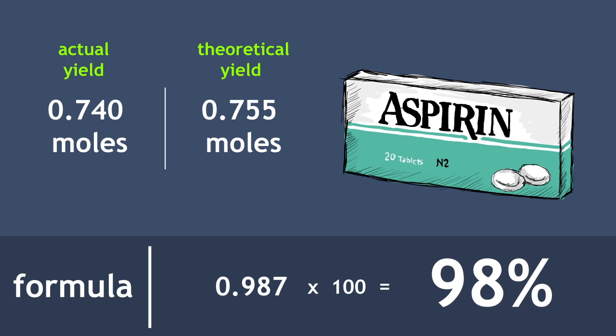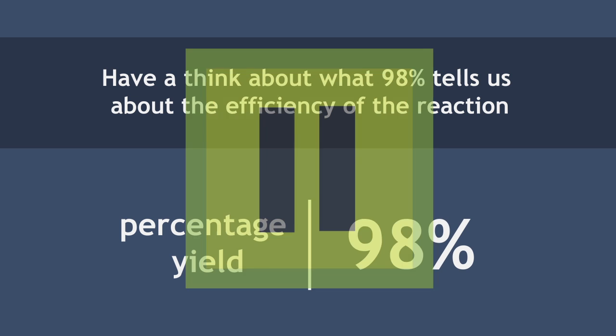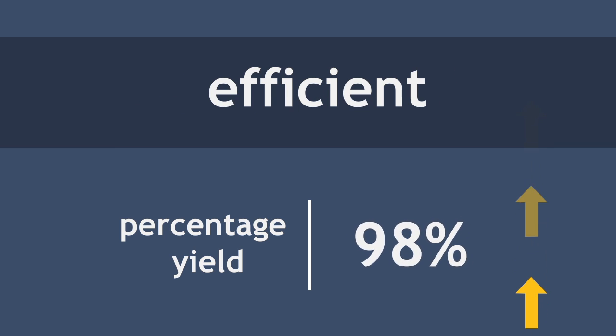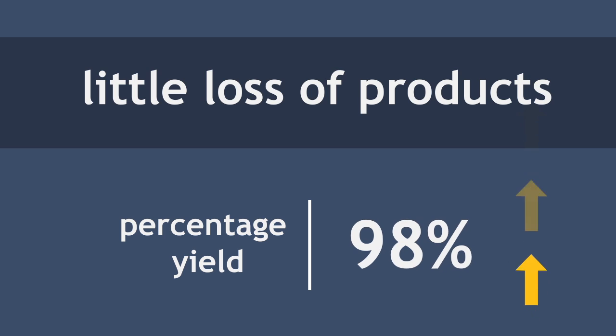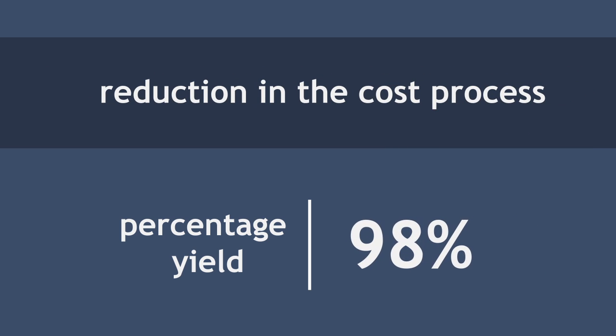Pause the video, and have a think about what 98% tells us about the efficiency of this reaction. This percentage yield is high, which tells us that the reaction is efficient with little loss of products, little waste of reactants, and therefore a reduction in the cost of the process.